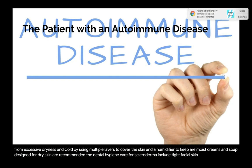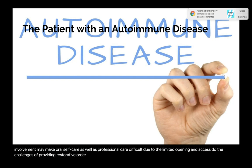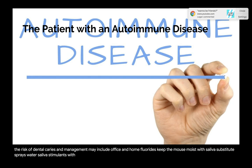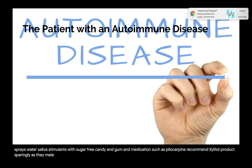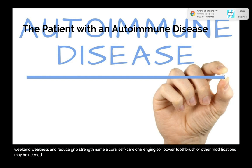Dental hygiene care for scleroderma: tight facial skin, microstomia, and TMJ involvement may make oral self-care and professional care difficult due to limited opening. Prevention of oral disease is crucial. Xerostomia increases caries risk; management may include office and home fluorides, saliva substitutes, sprays, water, saliva stimulants with sugar-free candy and gum, and medications such as pilocarpine. Recommend xylitol products sparingly as they may irritate the GI tract. Avoid dental products with alcohol. Finger lesions and tight skin may require a power toothbrush or other modifications. Tobacco cessation is strongly recommended.